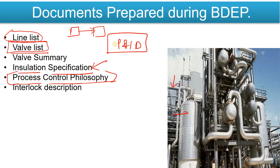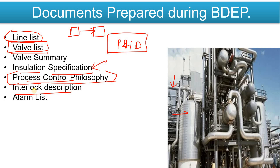Interlock Descriptions describe individual trip conditions — for example, a pump has to trip on high-high pressure from a pressure transmitter, or on low-low level of the tank. All that information is provided in the Interlock Description as well as in the Process Control Philosophy.